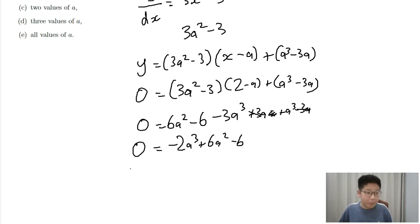Or to put it another way, 2a cubed minus 6a squared plus 6 equals 0. See my pun there?